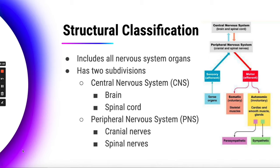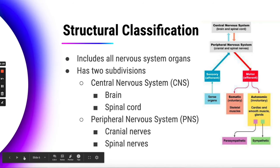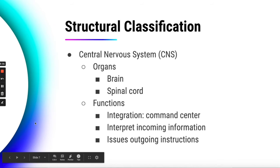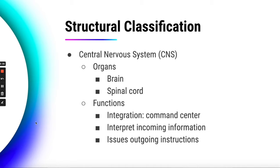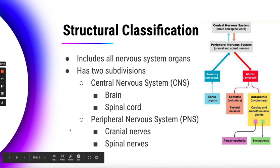The peripheral nervous system, or PNS, is going to include all of your nerves, such as the cranial nerves and spinal nerves — there are nerves other than these, but these are just examples. Further in the structural classification, the organs of the central nervous system would be the brain and the spinal cord as mentioned.